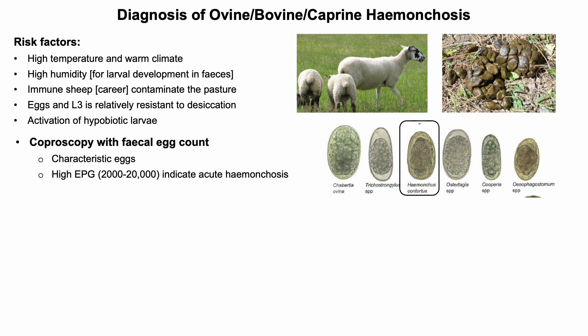Confirmatory diagnosis is made based on coproscopy. It is noted that eggs cannot be differentiated from the eggs of other genera of the Trichostrongyloidea superfamily, but they can be denoted as trichostrongyle type eggs. High egg per gram (EPG) count can be found in acute hemonchosis.